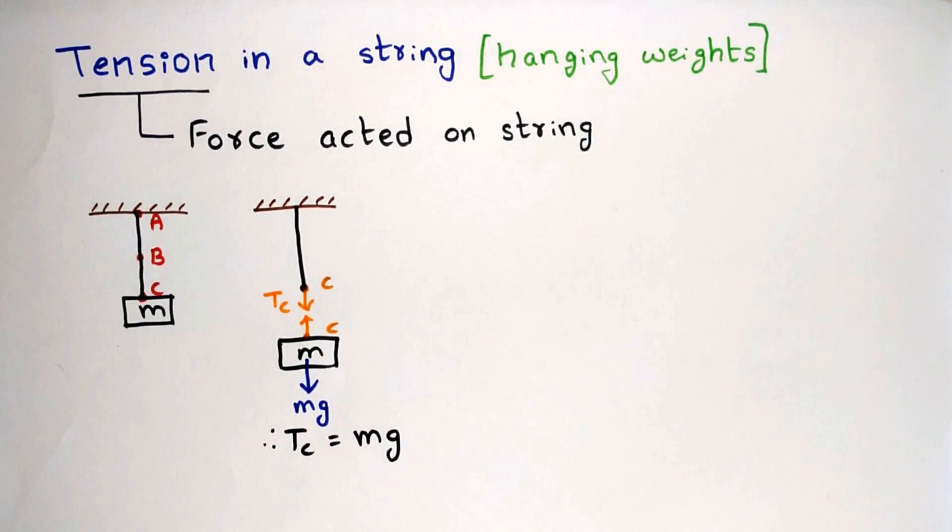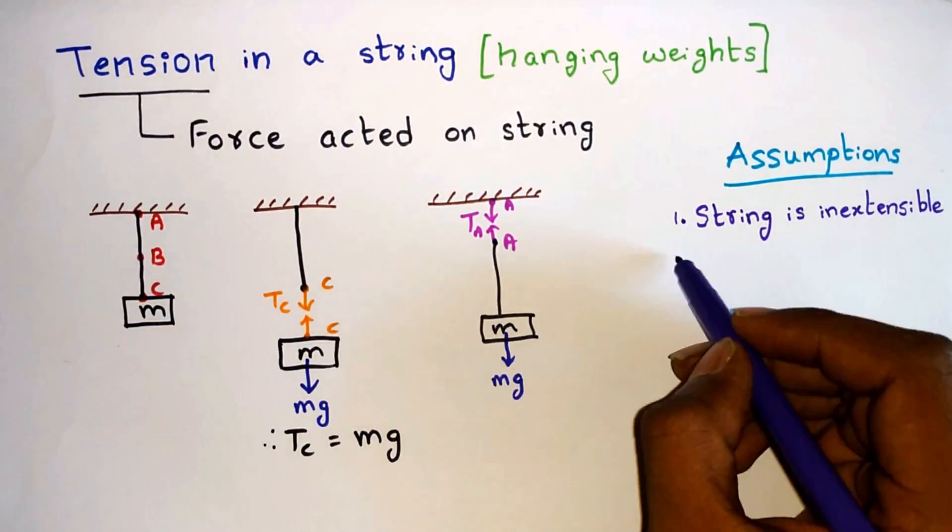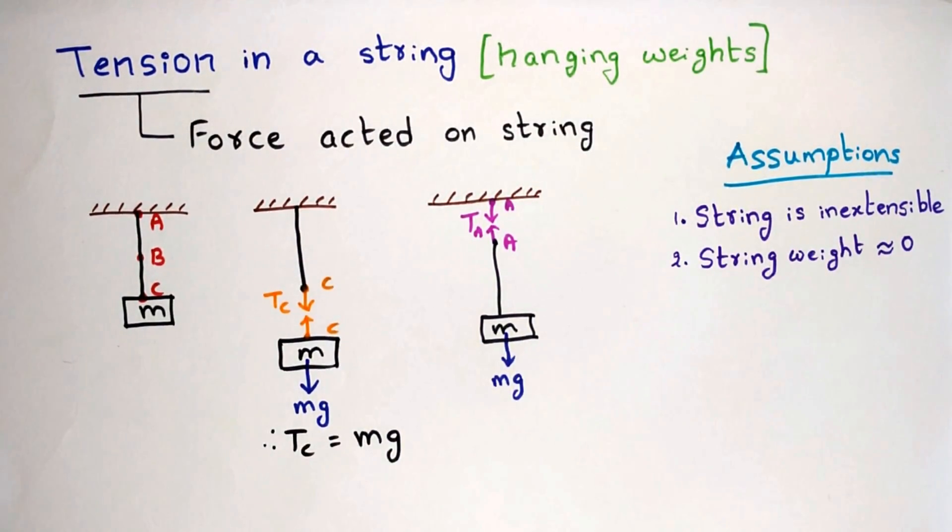Always remember that the tension force will act away from the body. Now at point a, if we consider the tension as Ta, then Ta force is supporting both mass of the string and mass m. But if we make assumptions that string is inextensible, which means its length is constant and the weight of the string is negligible, then Ta force will be supporting only the mass m. Thus we can write Ta equals mg.